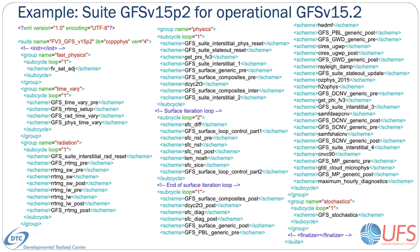Here's an example of the suite corresponding to the Global Forecast System version 15.2. The suite name is FV3GFS v15.2. Five groups—fast physics, time vary, radiation, physics, and stochastics—are used, because physics needs to be called from different parts of the host model. A detailed explanation of each primary physics scheme can be found in the CCPP scientific documentation.